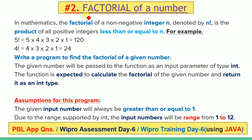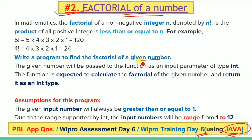Hello everyone, today we are going to discuss the second question of day 6 using Java. The question is to find the factorial of a number. We have to write a program to find the factorial of a given number. The factorial of a non-negative integer n, denoted by n!, is the product of all positive integers less than or equal to n.